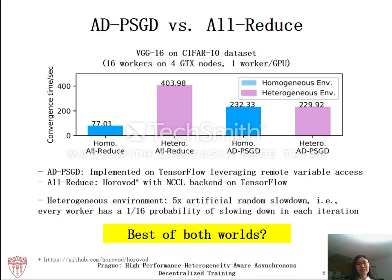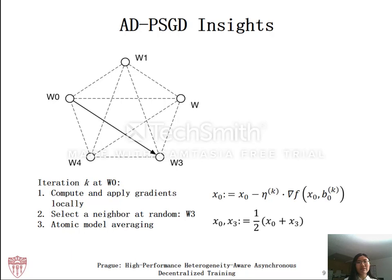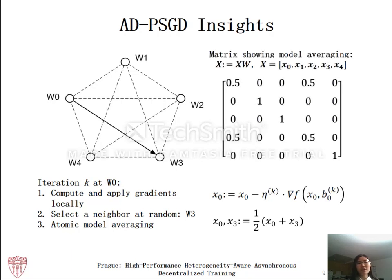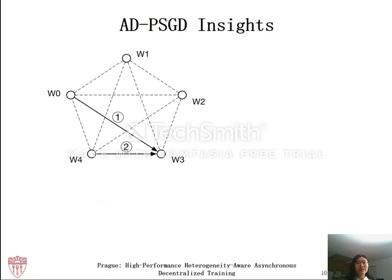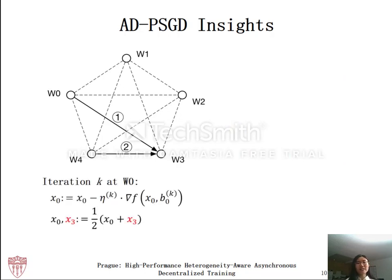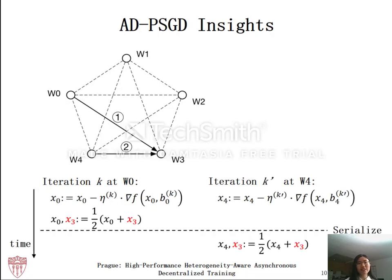Here we look at a case where W0 selects W3 to perform synchronization. The model averaging step can be expressed as a matrix W, where after computing x equals x times W, we have x0 and x3 equal to half x0 plus half x3, while x1, x2, and x4 remain unchanged. If W4 also wants to synchronize with W3, since model averaging must be atomic, the two conflicting synchronizations must be serialized. The resulting operations can also be expressed as a matrix.